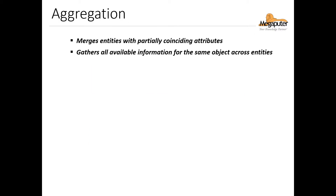The first post processor we're going to talk about is aggregation. It essentially merges entities with partially coinciding attributes and it gathers all available information for the same object across entities. Let's look at an example.